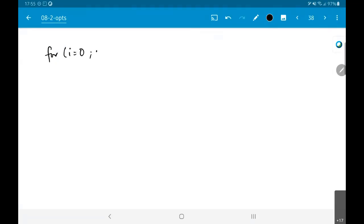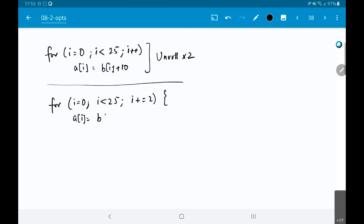What if I had for i equal to 0, i less than 25, i plus plus, a[i] = b[i] + 10, and I want to unroll by 2? I can do it in two ways. Either I can do for i equal to 0, i less than 25, i plus equal to 2, a[i] = b[i] + 10, and the second one becomes if i+1 less than 25, a[i+1] = b[i+1] + 10. Now, this is basically what I would call the inefficient way of doing it because of the overhead of the if condition.